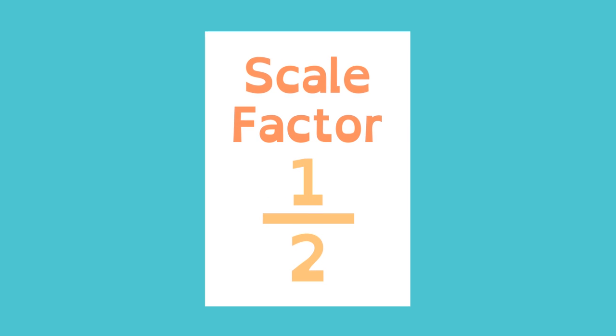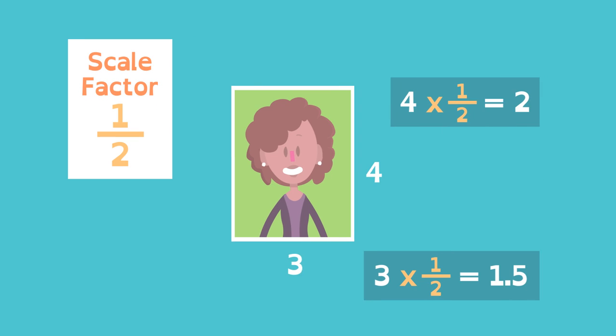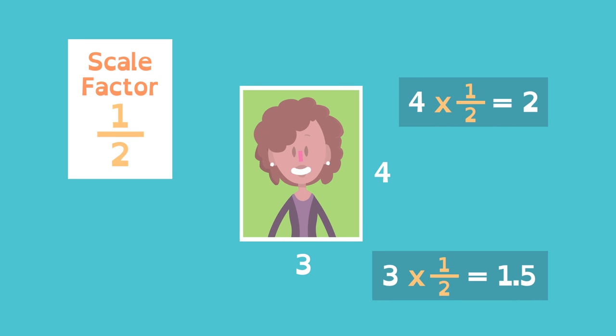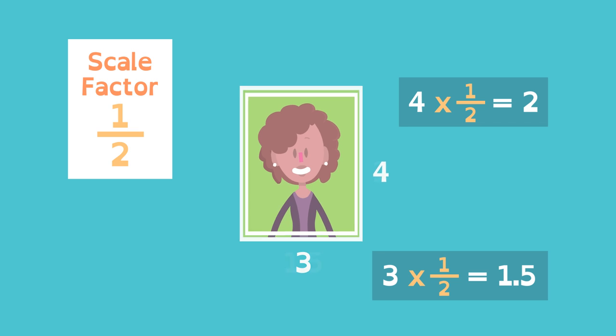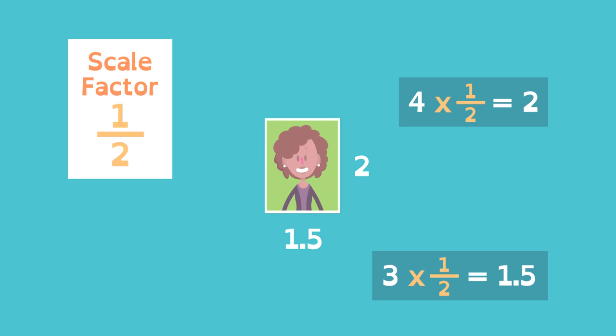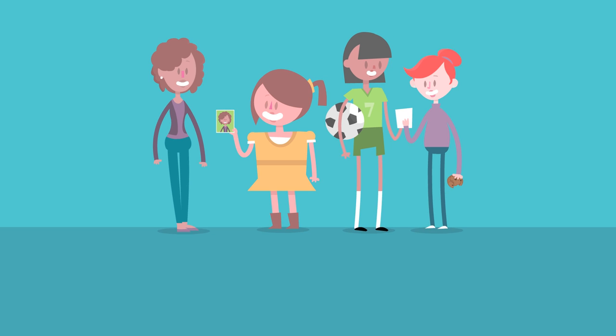If the scale factor is 1 half, the original dimensions are multiplied by 1 half. The dimensions of the reduced photo are 1.5 and 2. Different sizes, same proportions, with dilations.